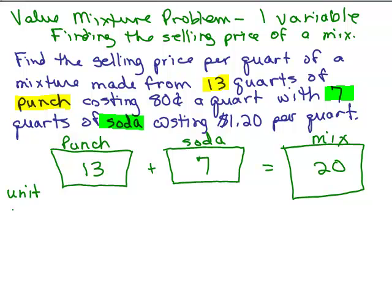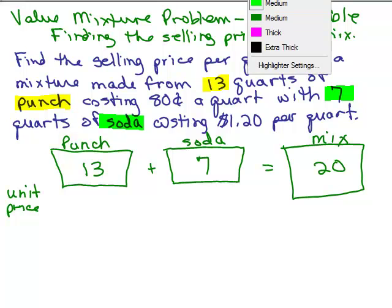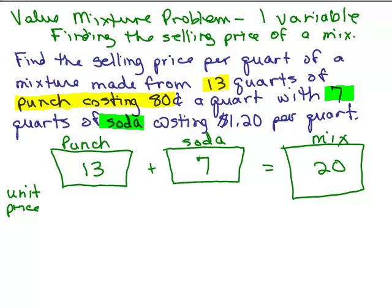Now what about the unit price or cost? In other words, how much for each quart is that given? Well, the punch right here costs 80 cents. The punch costs 80 cents. So what can we put here? I could either do this in dollars which would be 0.8 or I could do it in cents and write 80. But if you do that for the punch, you have to do the same thing for the soda. So I'm going to do it in cents, so I don't have any decimals. So I'm going to say it's 80 cents per quart. So my unit price is really in cents.